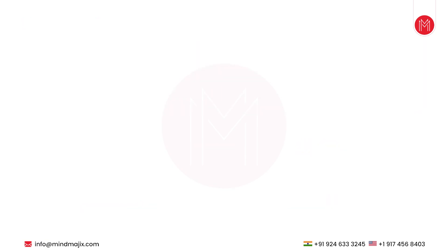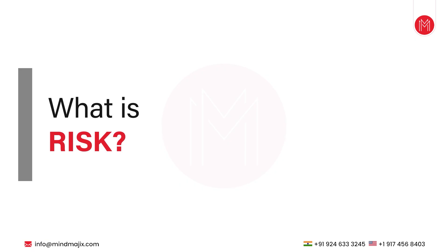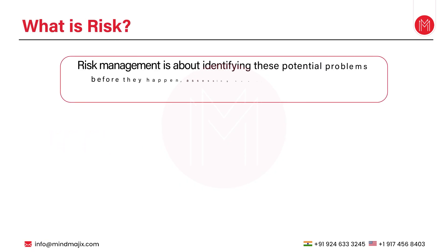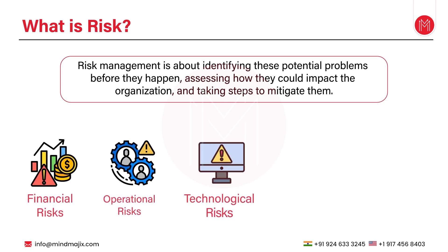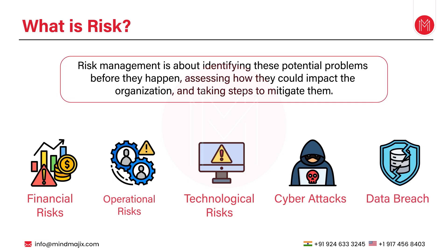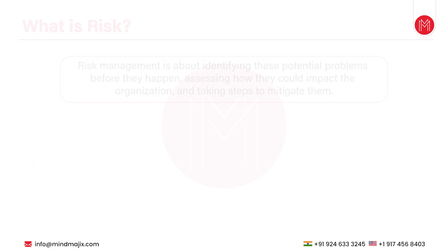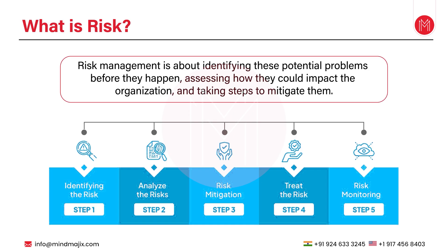Next, let's talk about risk. In businesses, risks are unavoidable — they can range from financial risks and operational risks to technological risks like cyber attacks or data breaches. Risk management is about identifying these potential problems before they happen, assessing how they could impact the organization, and taking steps to mitigate them. Think of risk management as a proactive measure — like setting up firewalls to prevent a data breach or putting financial safeguards in place to protect against sudden economic downturns.